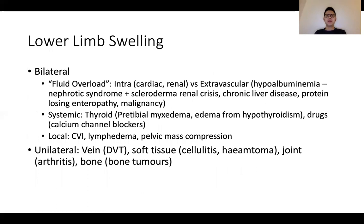The last approach is that of lower limb swelling — something we see very commonly, but the challenge is to incorporate some of the less common disorders into one's framework. Lower limb swelling can be thought of in terms of whether it's bilateral or unilateral. For bilateral swelling, I think of three big groups: number one, fluid overload states; number two, other systemic disorders; and number three, local problems such as chronic venous insufficiency, lymphedema, or pelvic mass compression. In the PACES exam, fluid overload and systemic disorders would probably be the more commonly tested features.